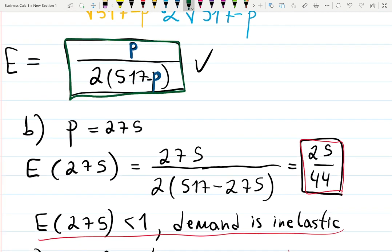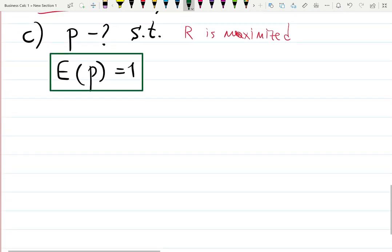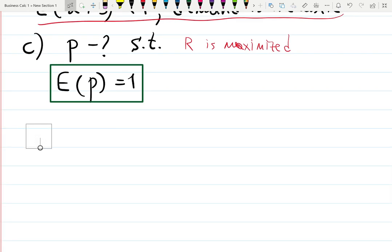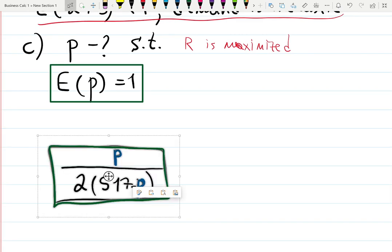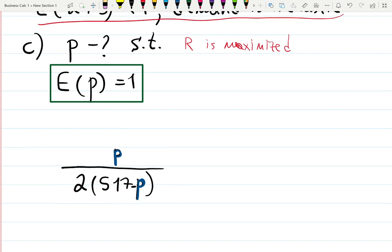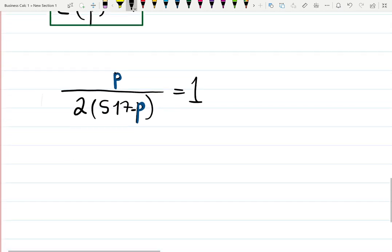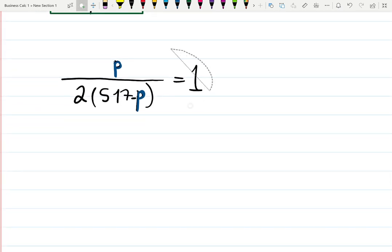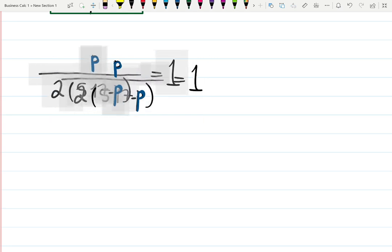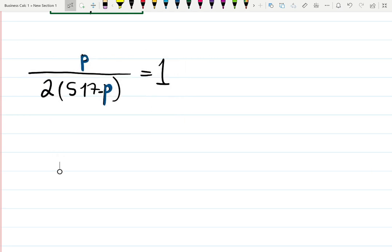I'm going to copy this and set it equal to 1 and solve. Copy paste. Now put away the box. Solving when all of this is 1, that's what they want us to do.